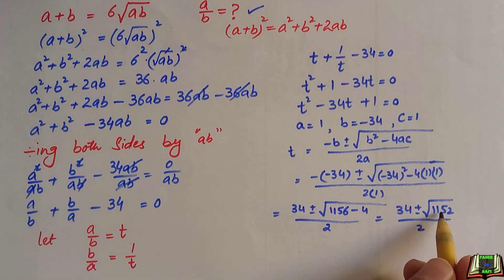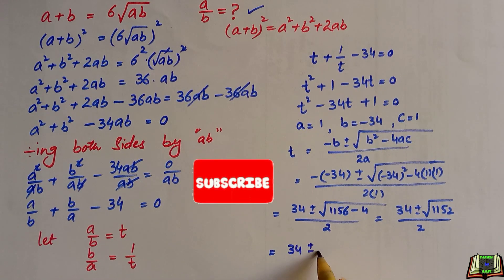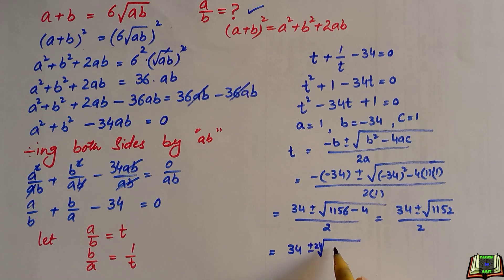Now, the square root of 1,152 is equal to 24 root 2. So, this is equal to 34 plus minus 24 root 2 over 2. At this step, we are going to take 2 as common. So, this is equal to 17 plus minus 12 root 2. So, 2 over 2 will be cancelled out.